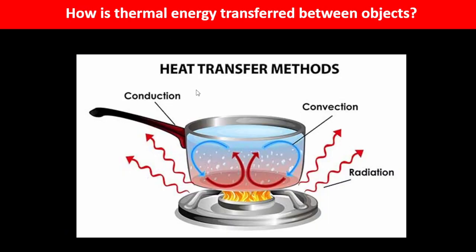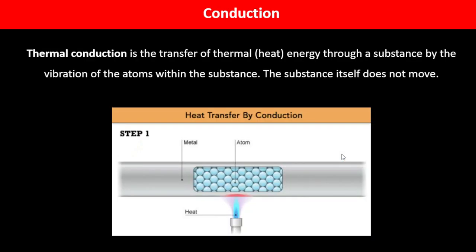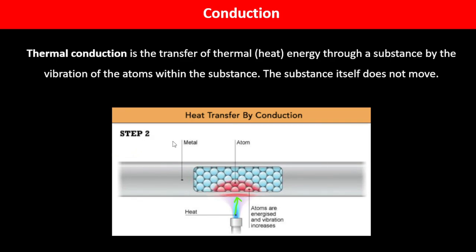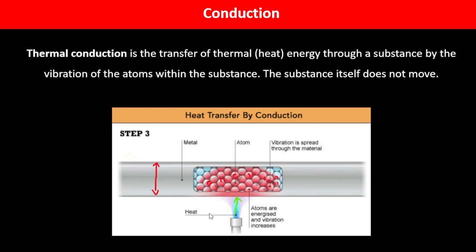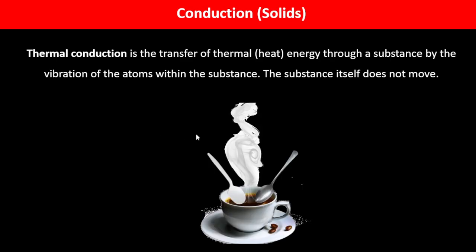Thermal energy can be transferred in three main ways: conduction, convection, and radiation. Thermal conduction is the transfer of heat through a substance by the vibration of atoms within the substance — the atoms vibrate, but the entire substance itself does not move. Thermal conduction takes place mainly in solids. For example, a metal spoon becomes hotter than a plastic spoon because metal is a good thermal conductor, while plastic is a very poor one. The spoon itself does not need to move for conduction to occur.